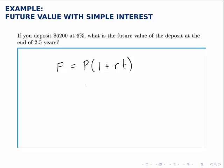Here we're given the present value, the principal, the amount that you deposit today, $6,200. We're given the interest rate, that's 6%, and we write it as 0.06 in the formula. The number of years is 2.5.